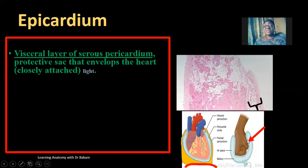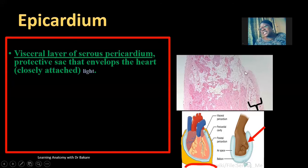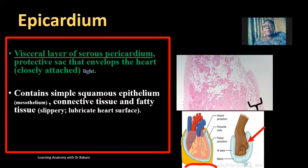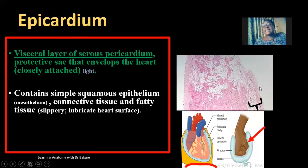So the epicardium can also be referred to as the visceral layer of the serous pericardium. In this histological presentation, the epicardium is the region marked in black on the outside, and this region appears to be very light. Within the epicardial layer, we have simple squamous epithelium — flat cells seen in the outermost covering — and this layer can also be referred to as the mesothelium.